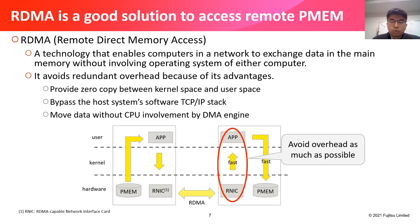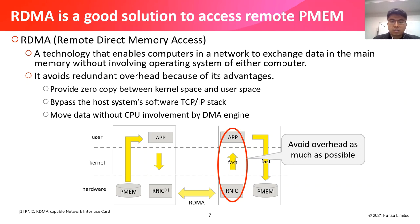RDMA is a good solution to access remote P-memory. RDMA is the short form of Remote Direct Memory Access. It is a technology that enables computers in a network to exchange data in main memory without involving the operating system of the other computer. It avoids redundant overhead because of its advantages — for example, providing zero-copy between kernel space and user space, bypassing the host system software TCP/IP stack, and moving data with reduced CPU involvement by the RDMA engine.